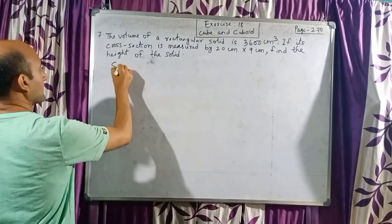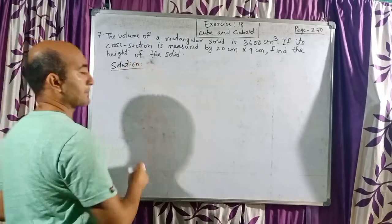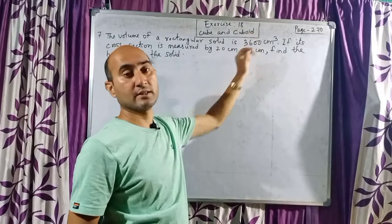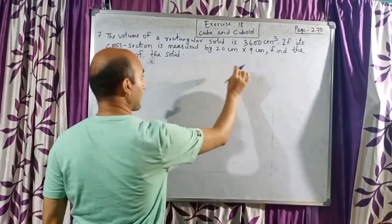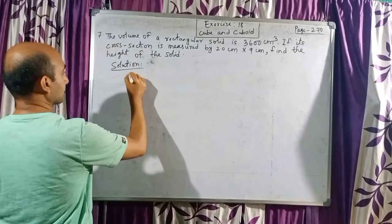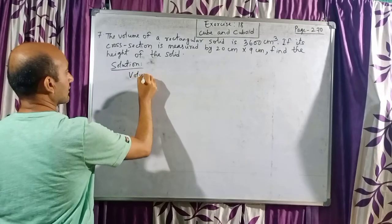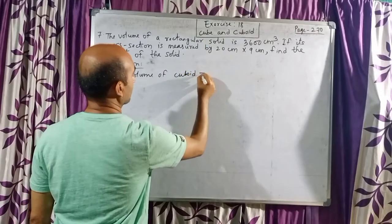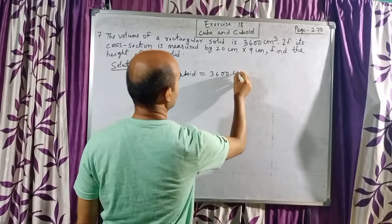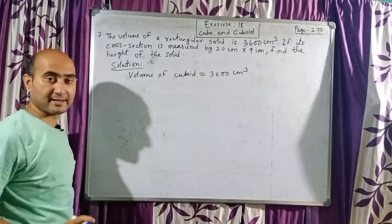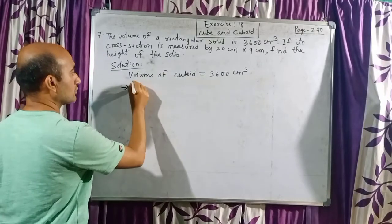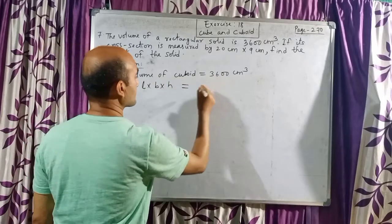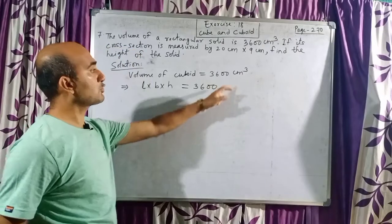It's a very simple question, children. So we will begin our solution. I have told you several times: whenever area's value or volume's value is given, you can use the formula and write the value. In the solution, volume of cuboid equals 3600 centimeter cube. In the next step, write the formula of volume of cuboid, that is length into breadth into height, and its value is 3600.